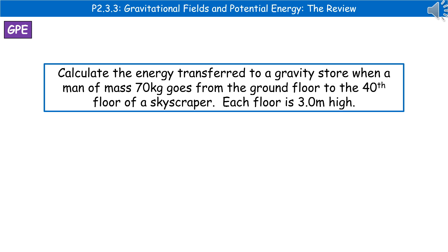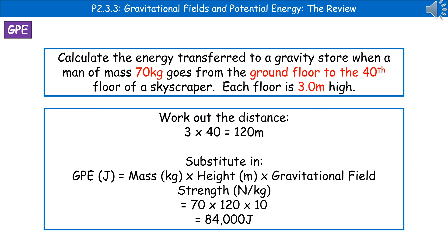An example question: calculate the energy transfer to a gravity store when a man of mass 70 kilograms goes from the ground floor to the 40th floor of a skyscraper, where each floor is three meters high. As always, highlight the key bits of information. First, work out the total distance: 40 floors times 3 meters equals 120 meters. Then recall the GPE equation: mass times height times gravitational field strength. Substituting in: 70 times 120 times 10 gives us 84,000 joules.